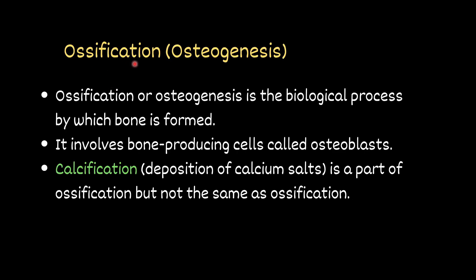Ossification or osteogenesis is the biological process by which bone is formed. It involves bone-producing cells called osteoblasts. Calcification, however, is different — it is simply the deposition of calcium salts. It is a part of ossification but not the same as ossification.